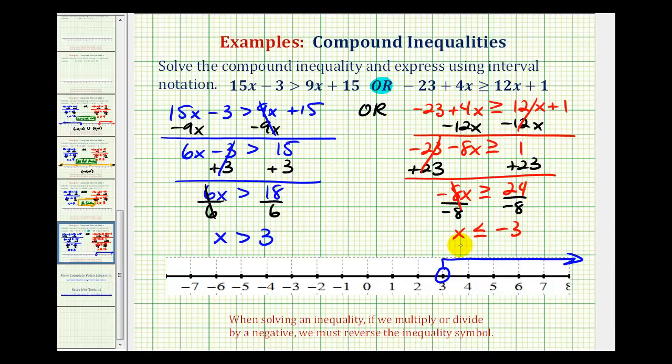Notice how negative 3 does satisfy this inequality because of the equal part. So we'll make a closed point on negative 3 and then an arrow to the left, because we want values less than negative 3. This would be the graph of our solution.